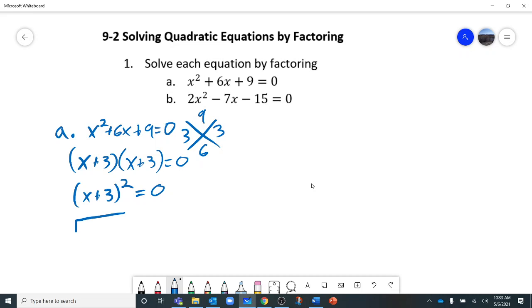And so we can actually take the square root of both sides. So let's do that. The square root of x plus 3 squared equals the square root of 0, which is pretty easy. It's 0. So we end up with x plus 3 equals 0, solve, subtract from both sides, and we get x equals negative 3.